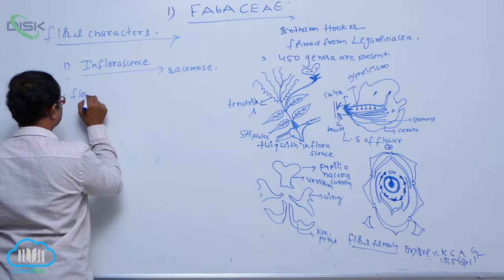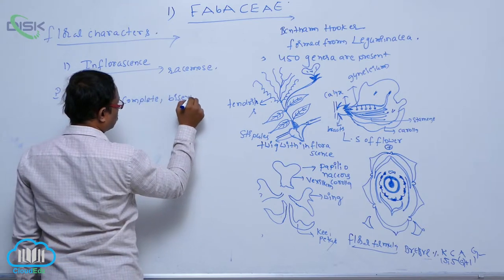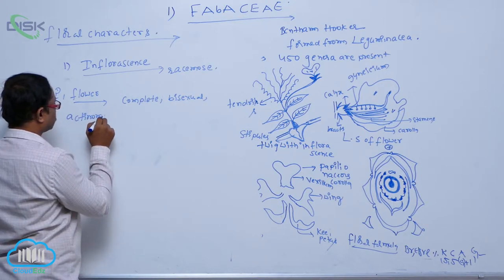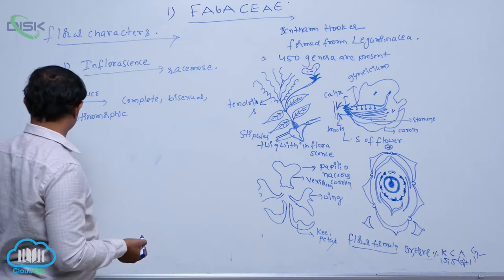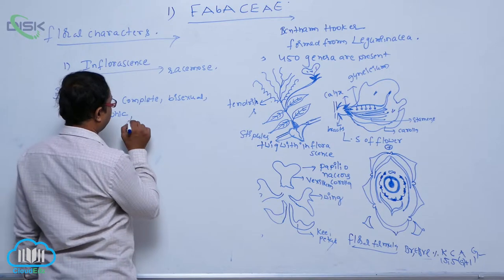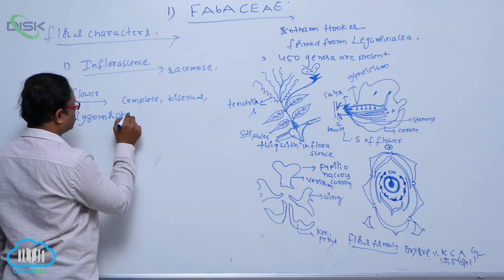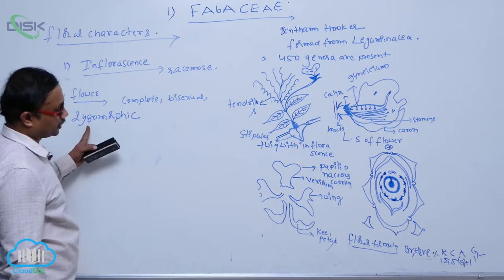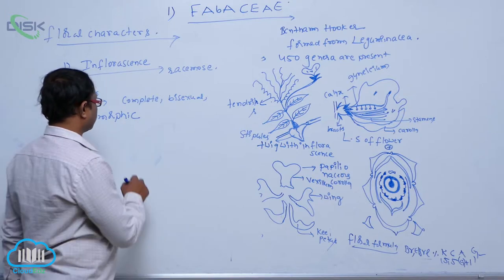The second one is the flower. The flower is first complete and bisexual — meaning it has both male and female parts — and actinomorphic. Actinomorphic means the flower can be divided into two equal parts by any vertical plane passing through the center. Zygomorphic flower, on the other hand, can be divided into two equal parts by only a single vertical direction passing through the center.